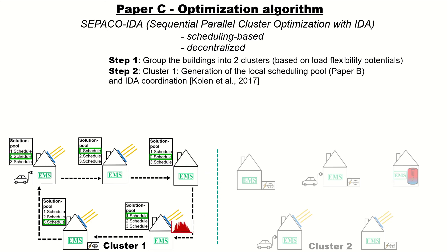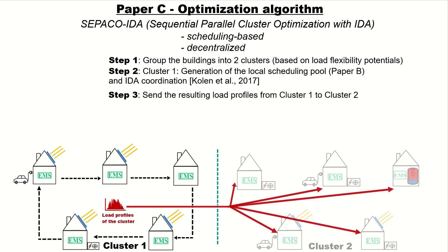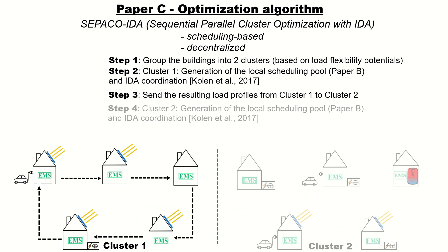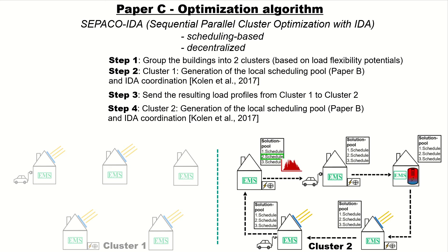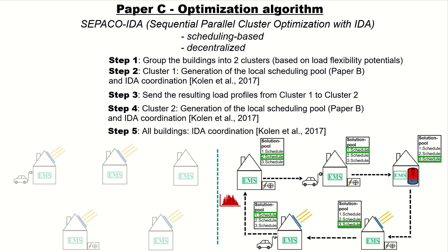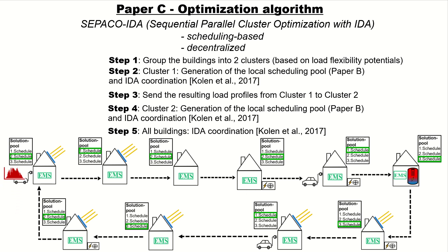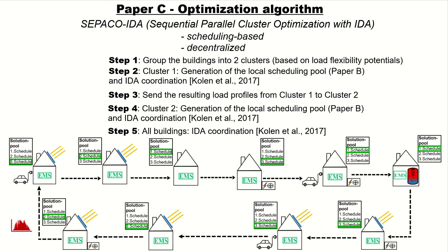In the next iteration, each building checks whether it can improve the situation of the whole cluster by changing its initial selection. If not, this step terminates. In step 3, the resulting load profiles, generation, and demand from cluster 1 are sent to cluster 2. In step 4, the buildings of cluster 2 do exactly what cluster 1 did — generating their local scheduling pool and using IDA coordination for individual schedule selection. In step 5, all buildings use IDA coordination to check whether changing their initial choice leads to a better situation for the whole residential area. If not, the algorithm terminates.